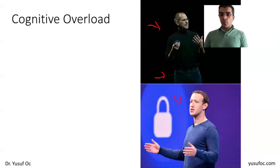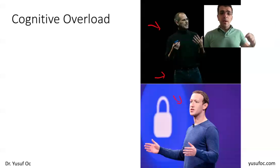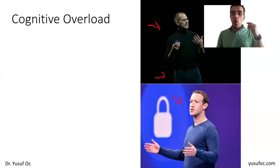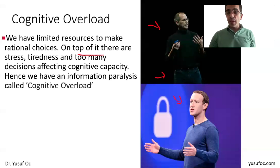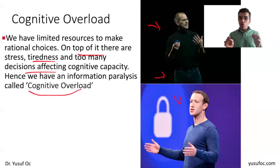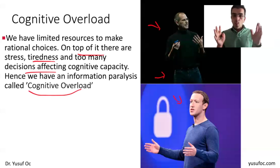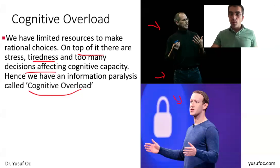They want to save their cognitive resources for later in the day when they have critical business decisions that require a clear mind. Even seemingly simple decisions — opening your closet and looking at all the choices — still use cognitive resources. We have limited capacity to make rational choices, and on top of that there are stress factors, tiredness, and too many small decisions like what to eat or wear. Later in the day you experience information paralysis — a feeling of cognitive overload.